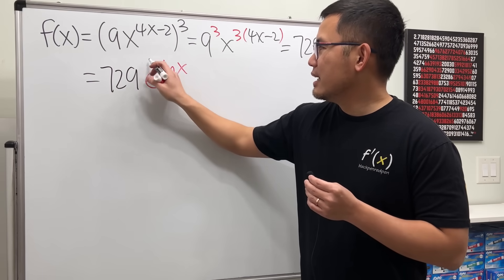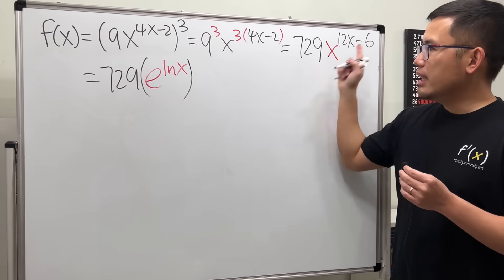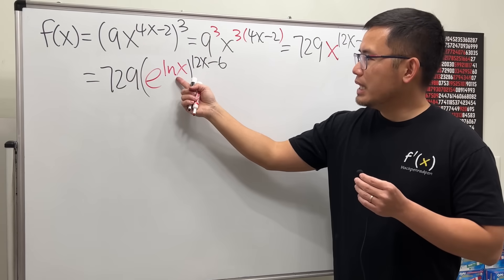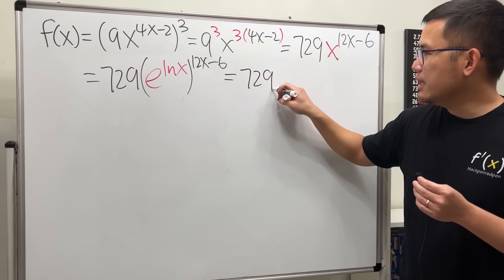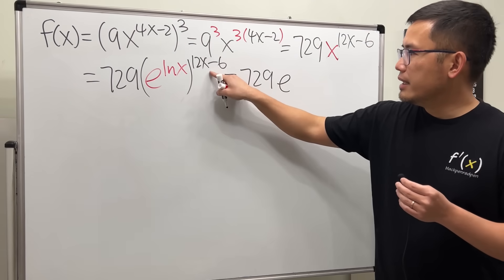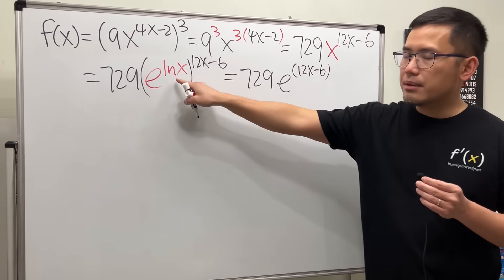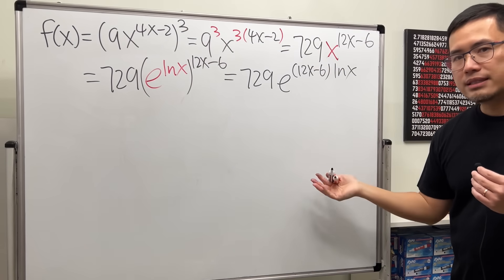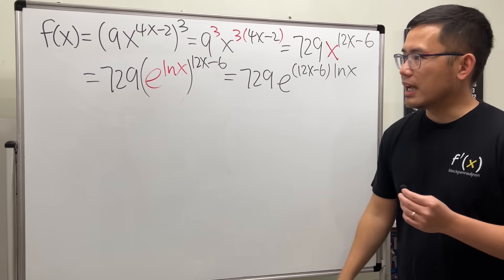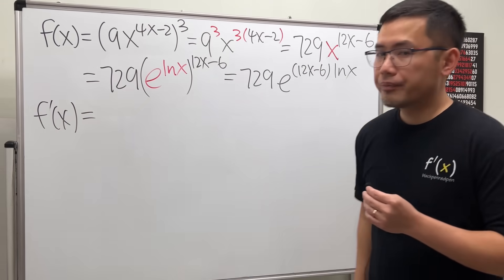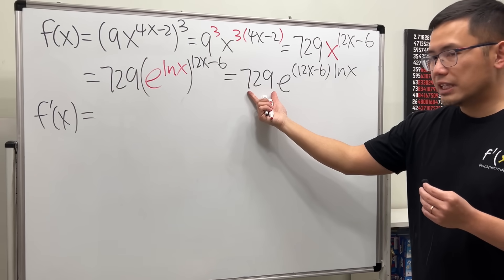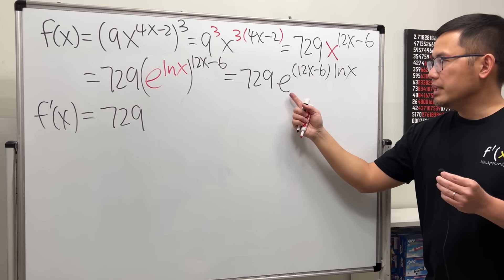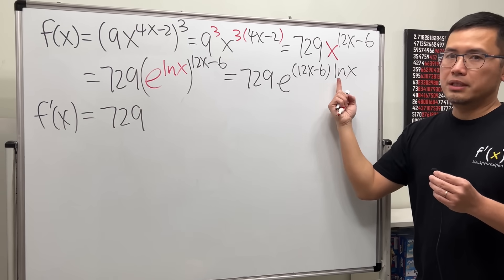We rewrite the function as 729 times e to the (ln x) power, and we still have the exponent (12x minus 6). Multiplying the powers, our f(x) becomes 729 · e^((12x − 6) · ln x). Now let's take the derivative. f′(x): we have the constant multiple 729, which we bring out right away.